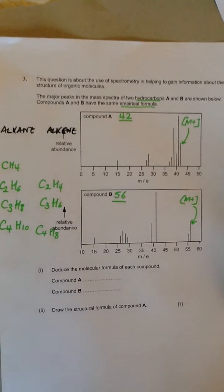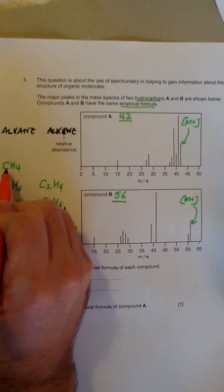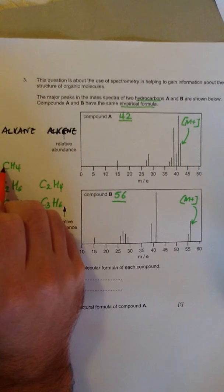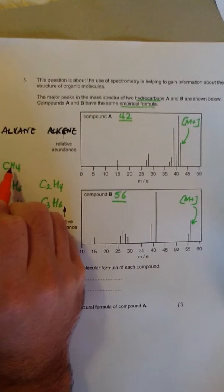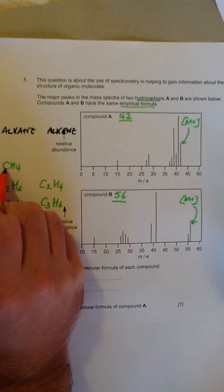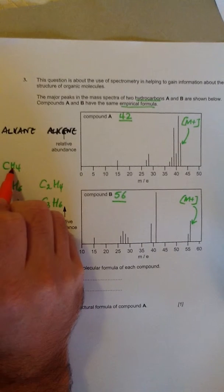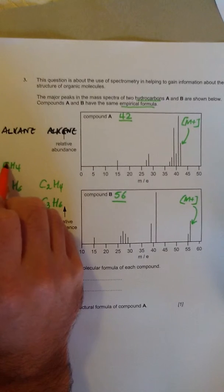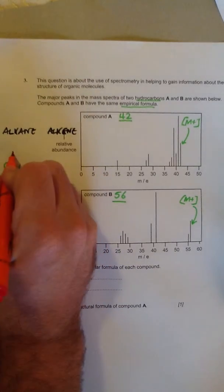Now for each of these compounds, we need to calculate what the molecular mass of that would be. I'm going to do that by adding up the mass of all the atoms in that compound. So the mass of carbon is 12, we know that from the periodic table. The mass of hydrogen is 1, so the mass of methane is 12 plus 4 times 1, which is 16.